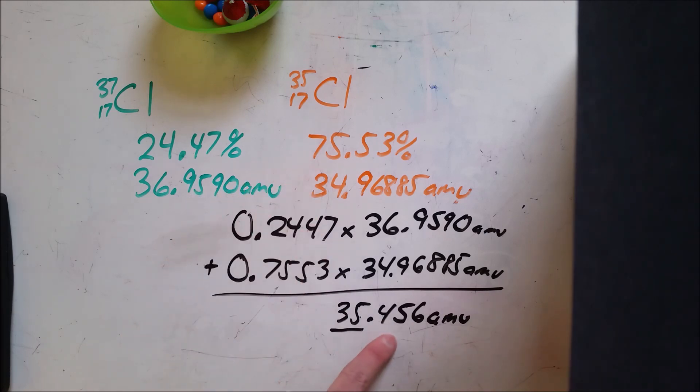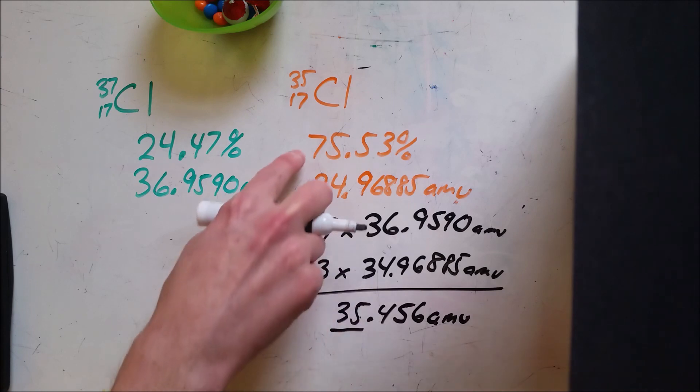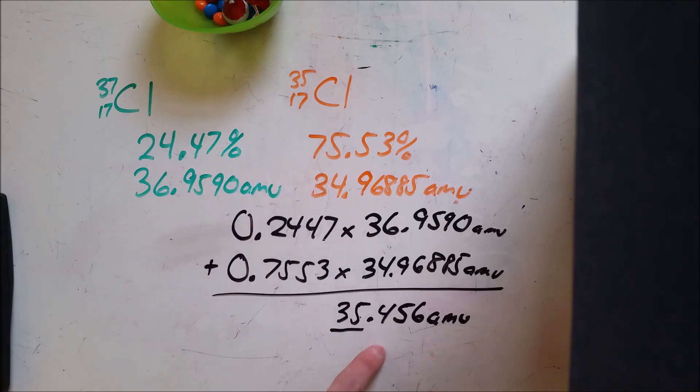And then if you kind of do a little wiggle room on the math there, because we've got some decimals here, but we're about 35.5. So we're about between 35 and 37. It's not 50-50, that would put us about 36. Instead it was 75-25, which puts us very close to 35.5. And so this is how you do the calculations to determine these.